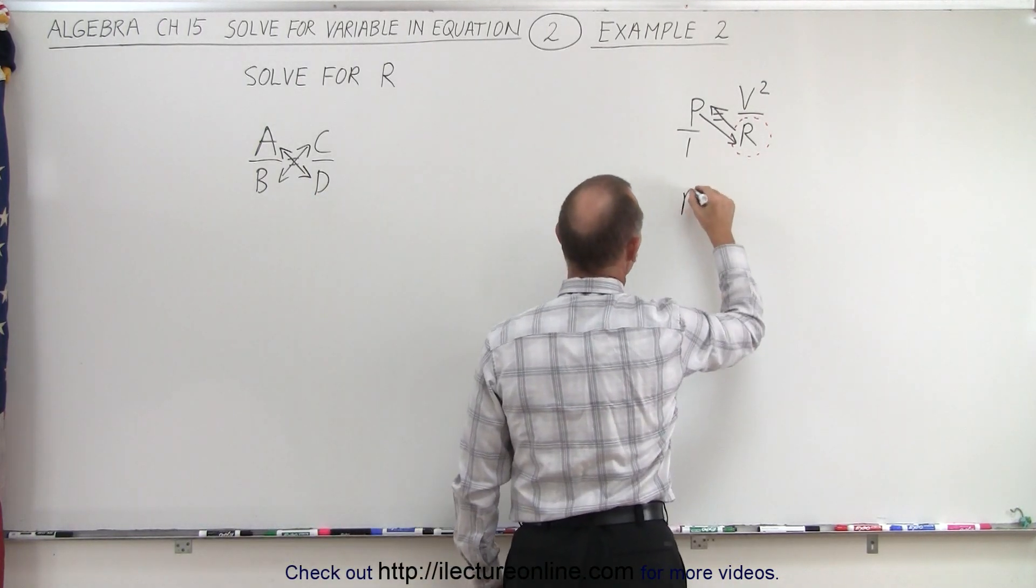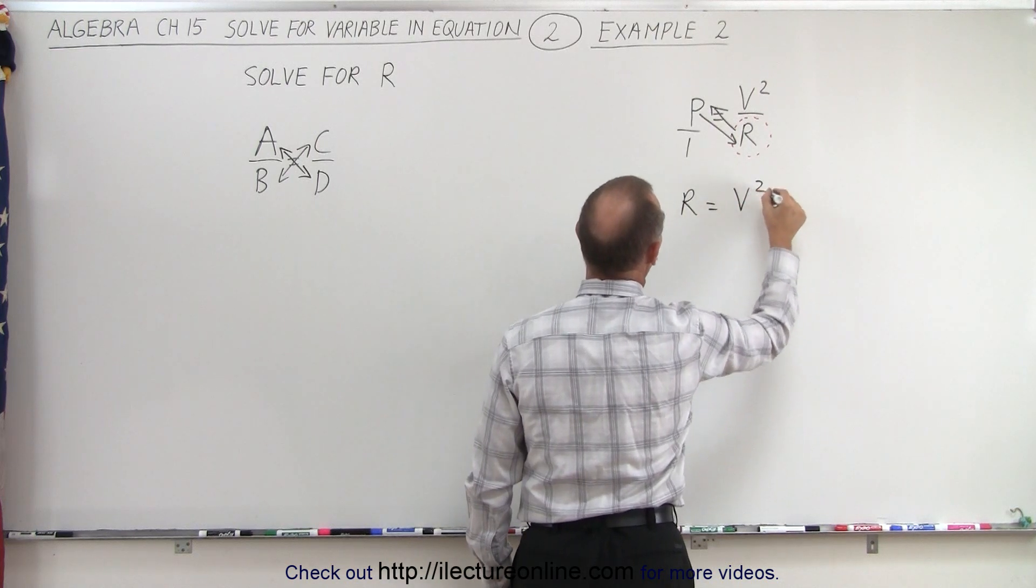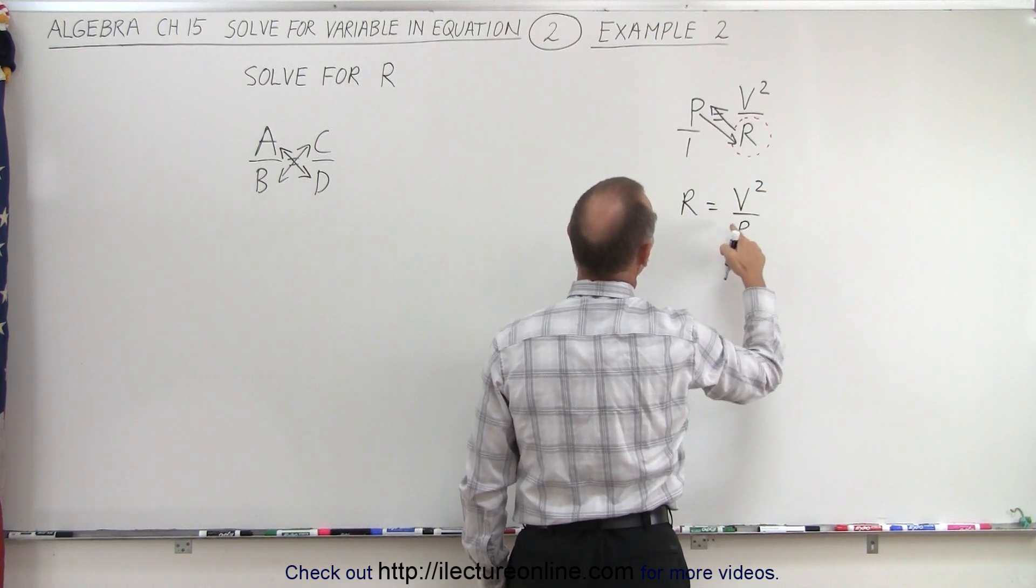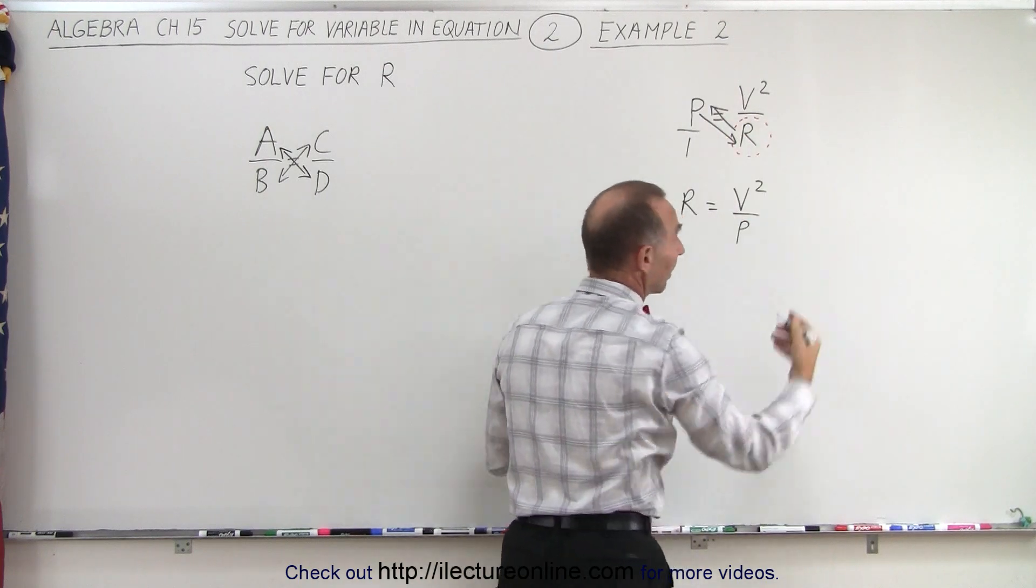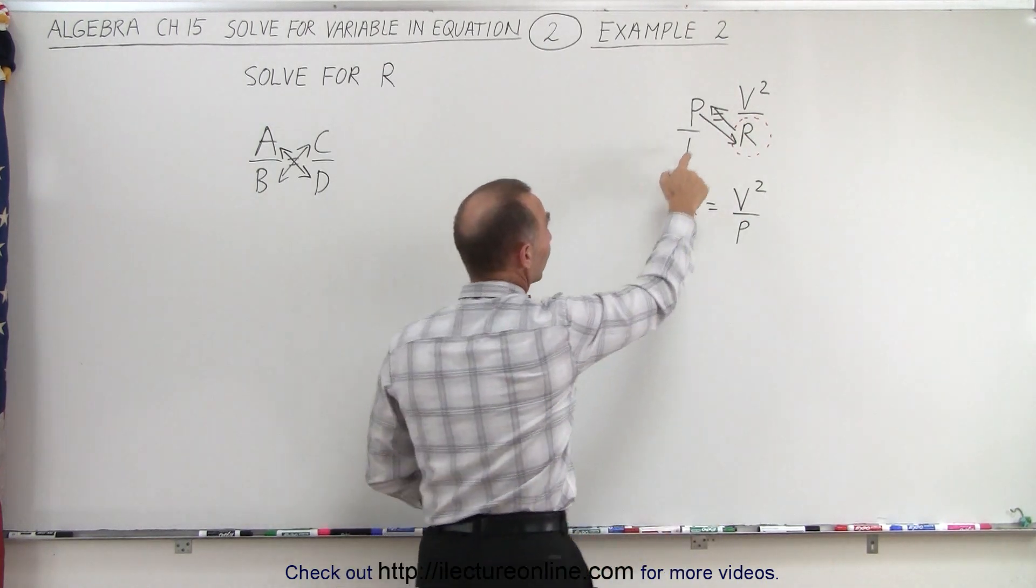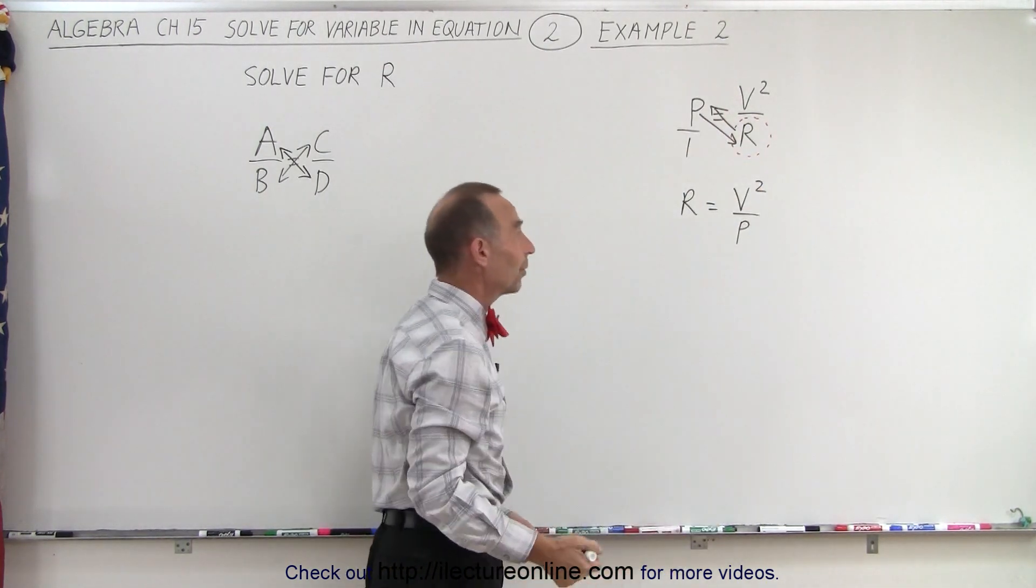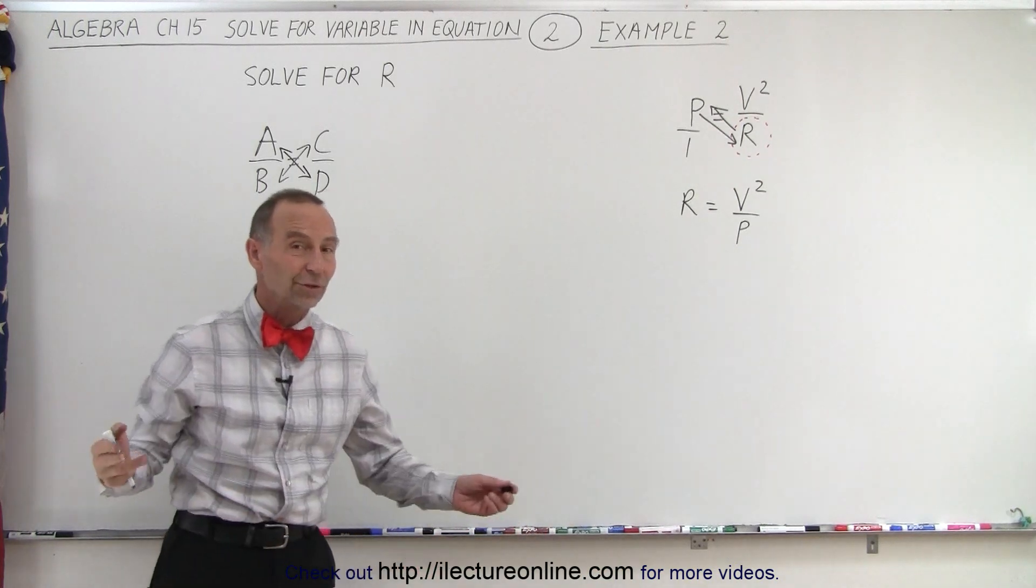then we have R is equal to V squared divided by P. So simply move the R up here, the P down there, and we're done. Of course we can move the 1 over that way, 1 times V squared is still V squared, and that's the final solution.